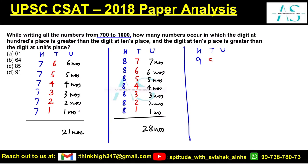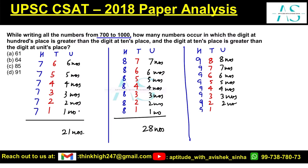For the last case, with 9 at the hundreds place, the tens digit can be 8, 7, 6, 5, 4, 3, 2, or 1. The number of unit digit options gives us: 8, 7, 6, 5, 4, 3, 2, and 1 numbers. The total is 8×9÷2 = 36 numbers. So our final answer is 21 + 28 + 36 = 85 numbers. Option C is the correct answer.